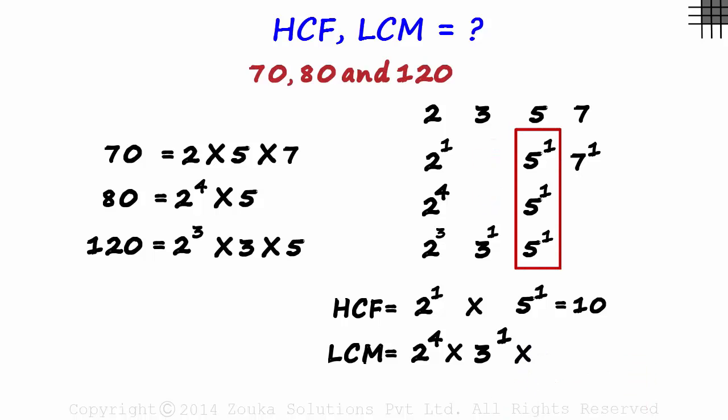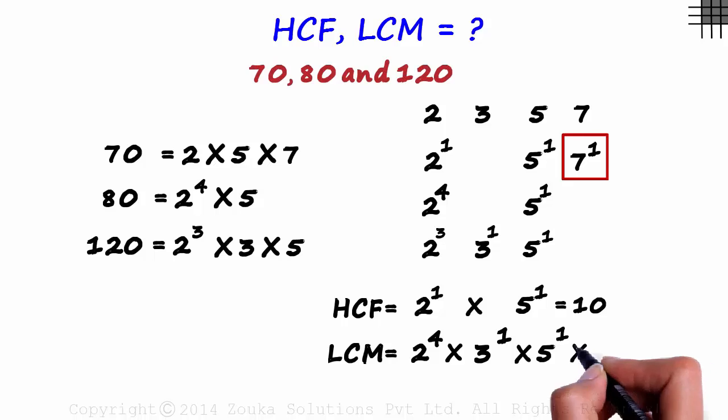Third column, it's 5 raised to 1. And the fourth column has 7 raised to 1 as the highest power. This product equals 1680.